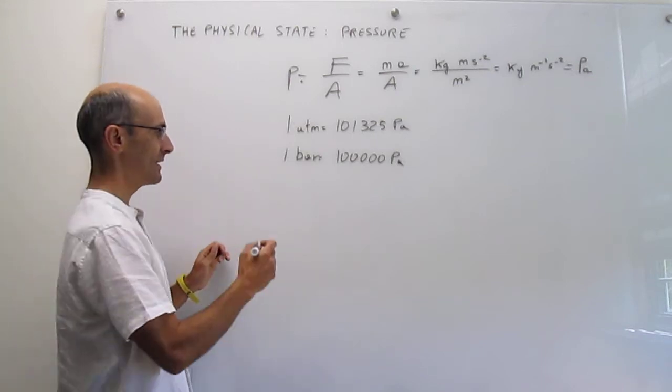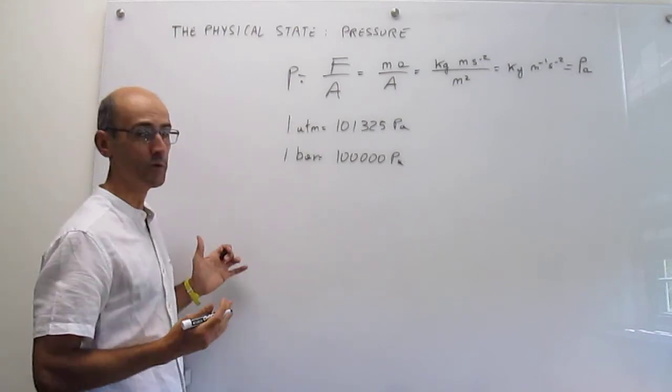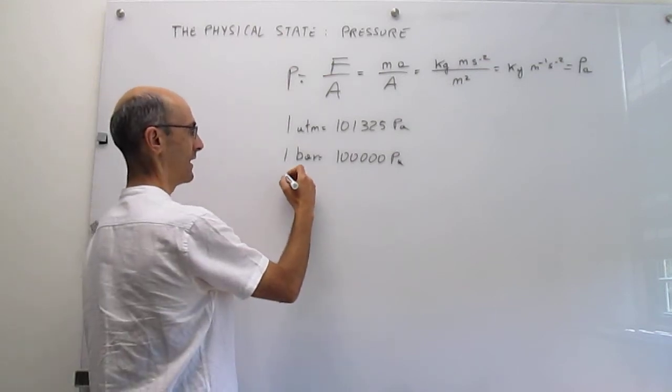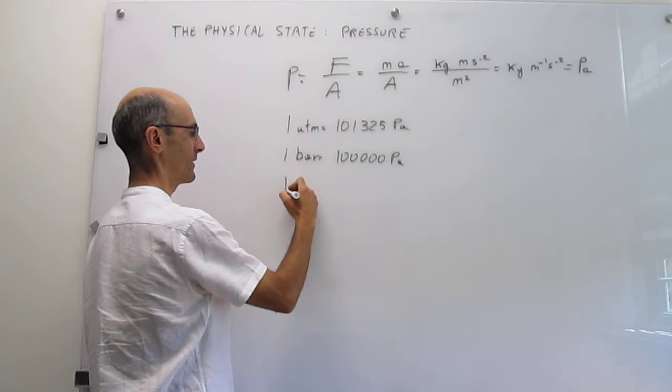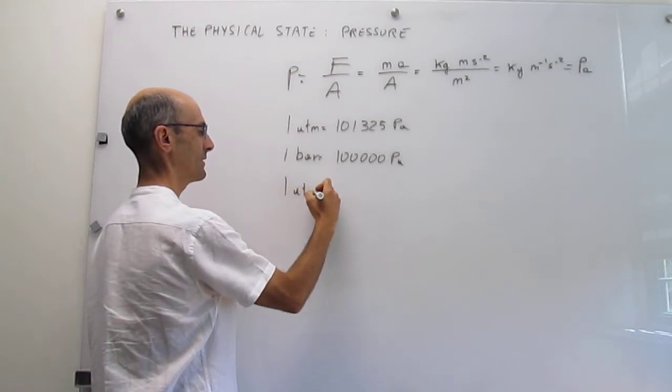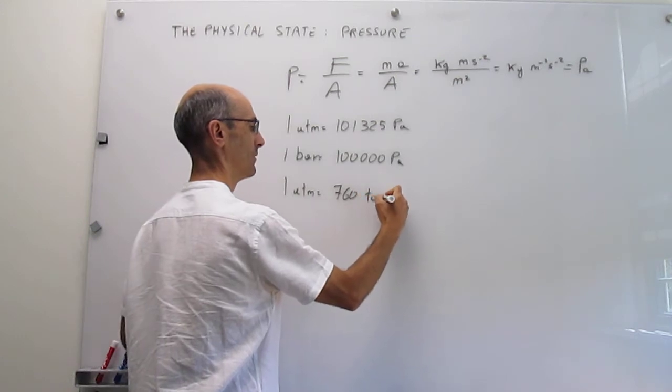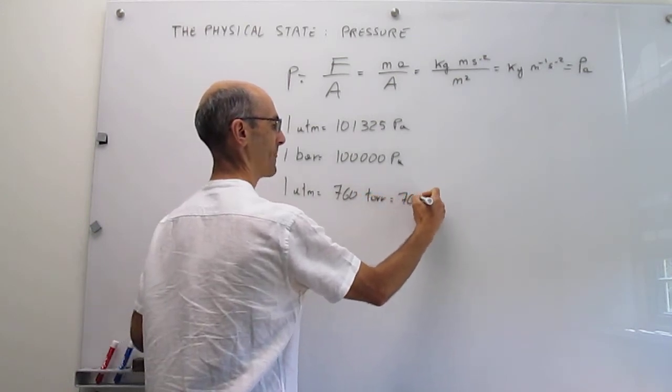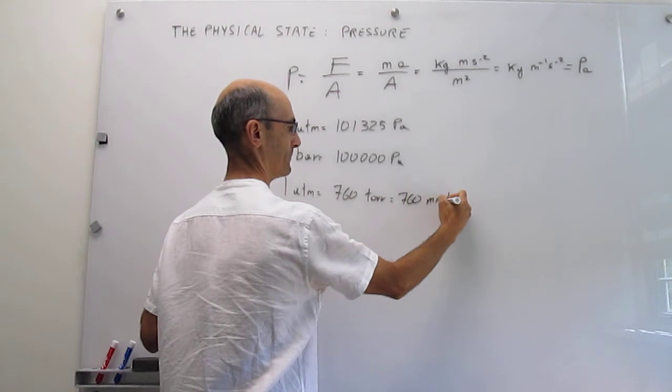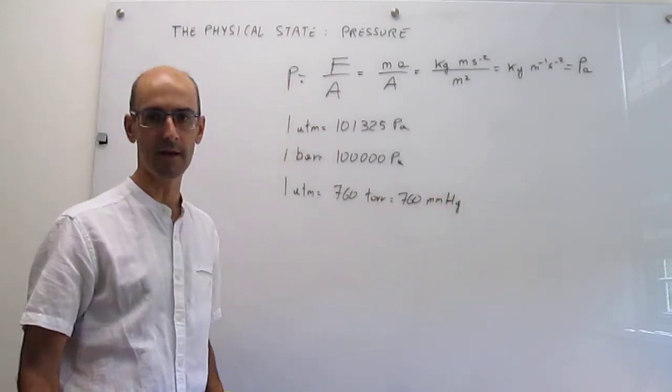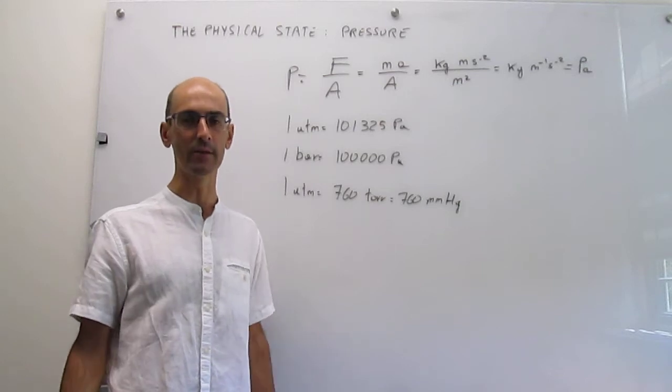There's a final pressure unit that is common, and that will be torr or millimeters of mercury. One atm is equal to 760 torr or 760 millimeters of mercury. So this is all of the pressure units that we're going to be handling in this course.